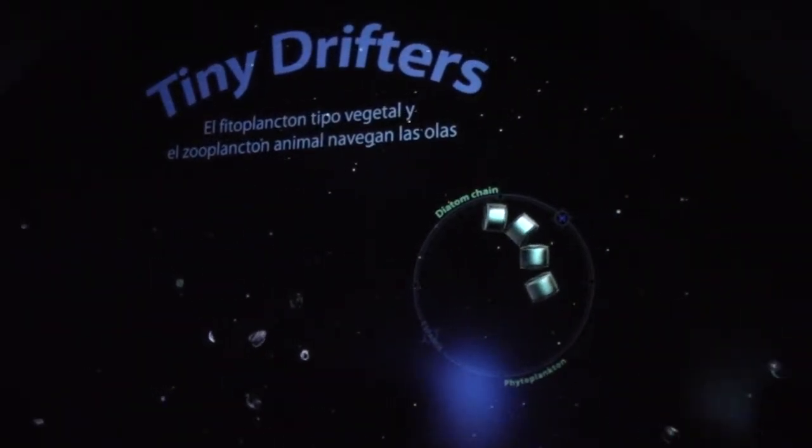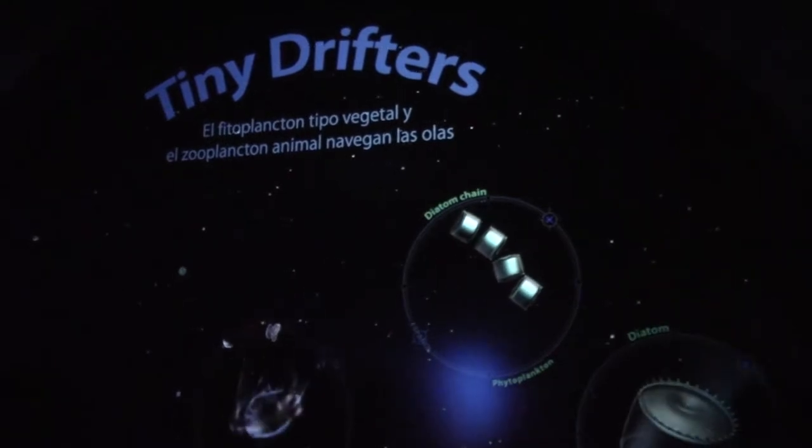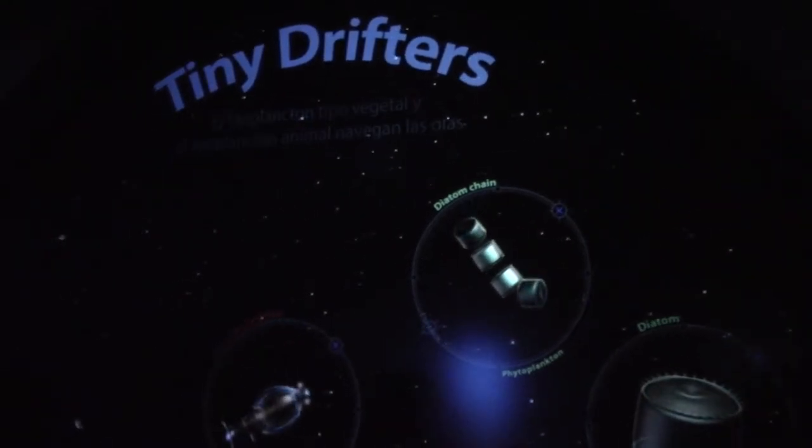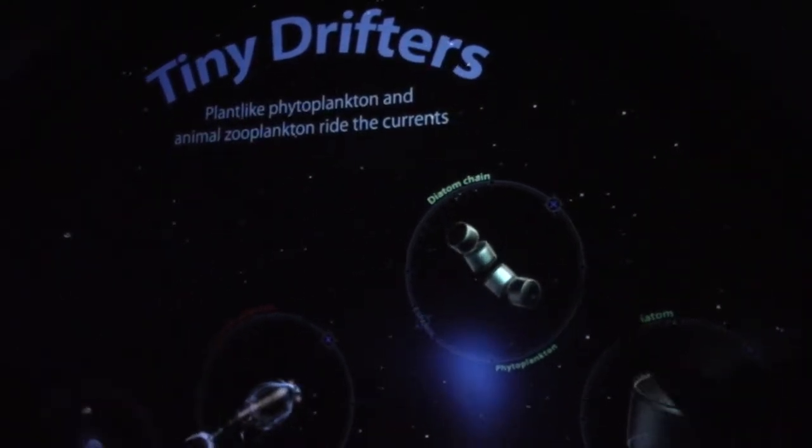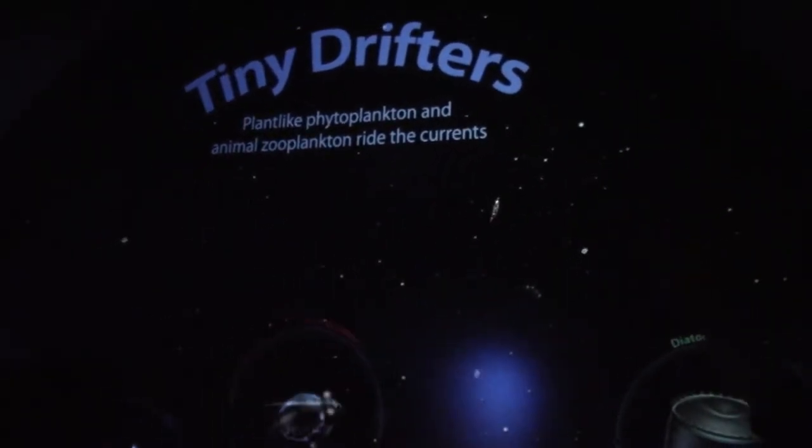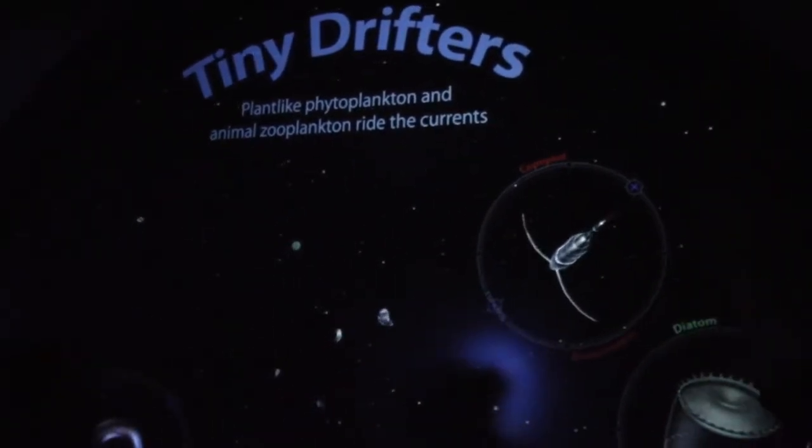Let's look at tiny living things that form the base of the ocean food web. You would need a microscope to see live examples of these, but the Monterey Bay Aquarium in California makes it easy.